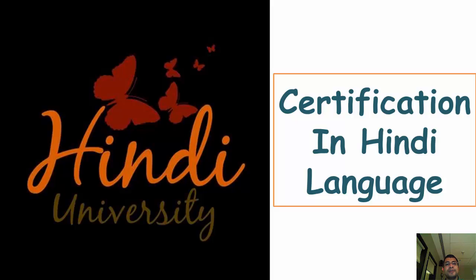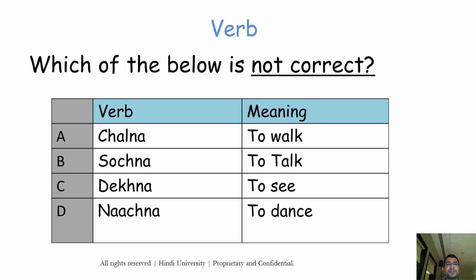The first sample question is on verbs. You might see a list of all the verbs here — in the second column you see verbs: Chalna, Sochna, Dekna, and Nachna, and their meanings: to walk, to talk, to see, and to dance. You have to identify which one is not correct — which verb doesn't have the correct meaning. Choose among A, B, C, and D. I'm not giving you the answer, just the question — think about it and write down in the comments. This is a sample question and an opportunity for you to prepare for the certification.